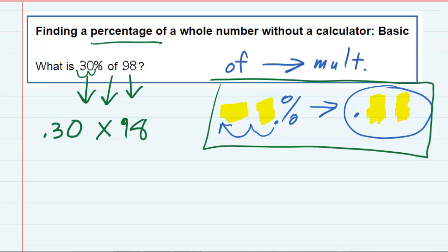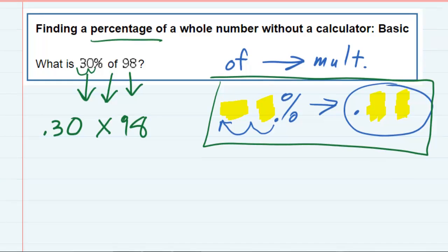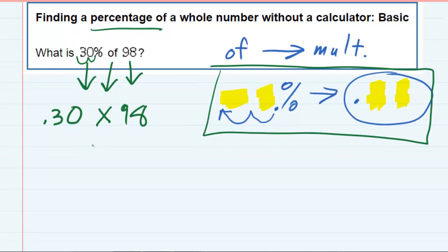What is 30% of 98 is just .30 times 98, and that's something that we can do without the benefit of a calculator. I'm going to rewrite it as 98 times .30, just writing it vertically.